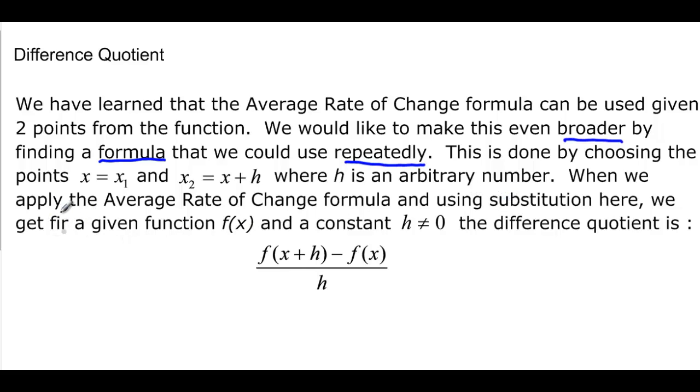So we're just going to take the average rate of change and substitute the function notation. We get a given function, that's something ugly, f of x and a constant h, which can't be zero.